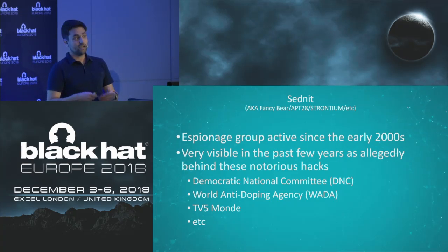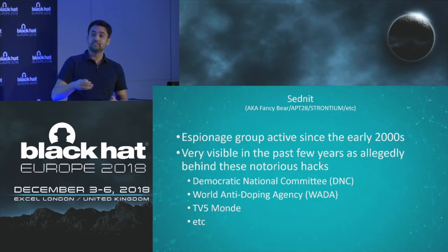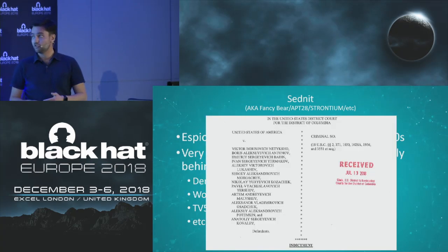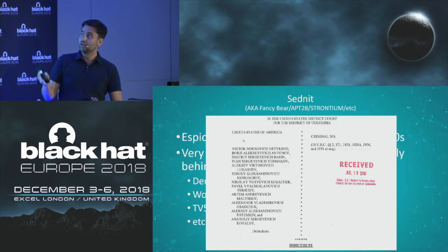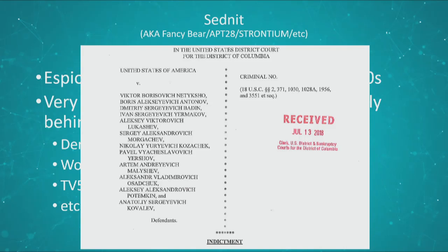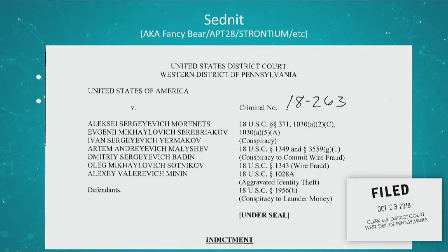Other groups actually tried to attribute these attacks to a specific group. Something very interesting happened last July, which was an indictment from the United States Department of Justice where they were naming specific people, saying that these guys were behind the DNC attack. This is another hint that these guys are linked to this. And why it's important for us is because they are actually naming a lot of the backdoors that the Sednit operators are using — the same backdoors we are seeing targeting our customers.